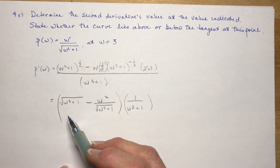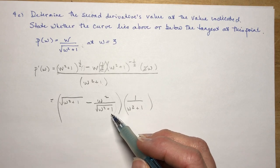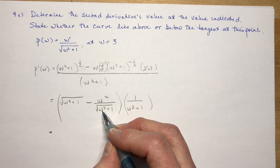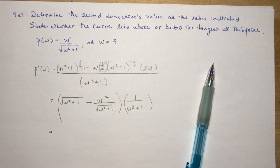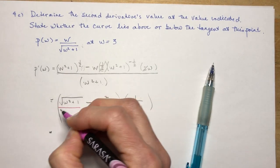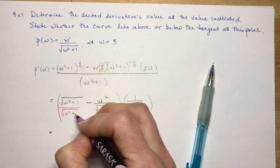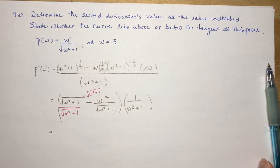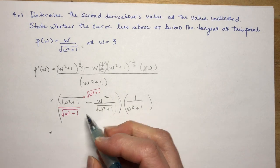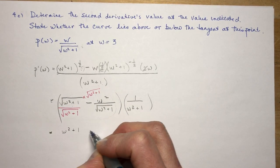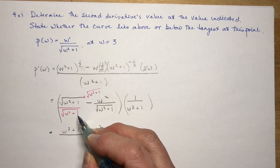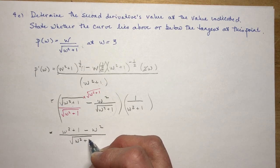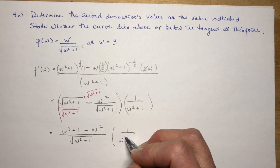In order to combine these two terms, I need to find a common denominator. The common denominator is going to be √(w² + 1). So both terms share the same denominator, meaning I have to multiply accordingly. Now if I multiply these together, I get (w² + 1) minus w², all over √(w² + 1), still multiplied by 1/(w² + 1).